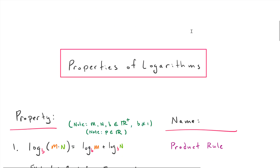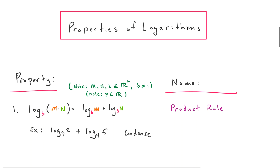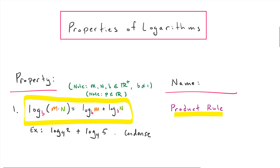Let's start with properties of logarithms. The first property, highlighted in yellow by the number one, is called the product rule. It's called the product rule because inside the logarithm we have the product of two things — this can be extended to more than two things. Some important things to note: the base b is the same everywhere. I've color coded things so you can see that b, m, and n are the same on both sides of the equation.